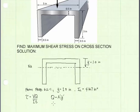So let's find Q first. Q is equal to A-prime times Y-bar prime. And A-prime is the area above or below the point where we are evaluating shear stress, which in our case is the neutral axis.